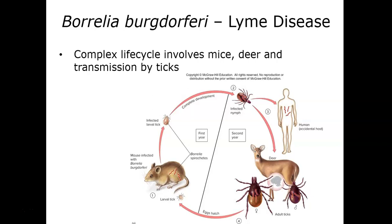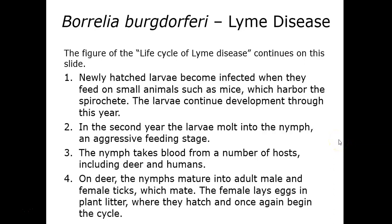Borrelia burgdorferi causes Lyme disease and is usually associated with animals like the white-footed mouse and the deer. The transmission involves multiple members including the tick, known as Ixodes scapularis, the white-footed mouse, and the deer. The newly hatched tick larvae become infected when they feed on small animals such as mice, which may harbor spirochetes.